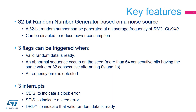The RNG peripheral is based on continuous analog noise that provides a random 32-bit value, which will be explained in detail later on. The RNG is able to generate a 32-bit random number at an average frequency of RNG_CLK/40. The DataReady flag is set in the status register when new random data is ready and validated.